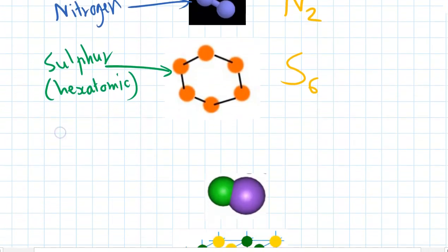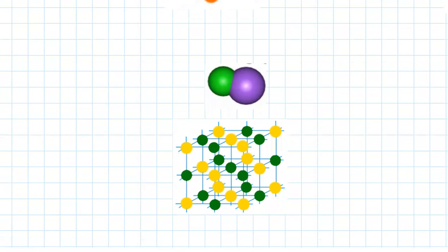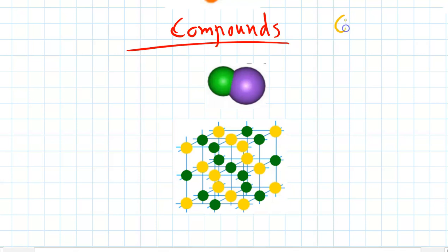Well, chemical formulas are also really important when we get to compounds as well. Because for compounds, the chemical formulas are telling us what proportion of each type of element exists in that compound. So we've got our compounds, and again, we'll write our chemical formulas over here.